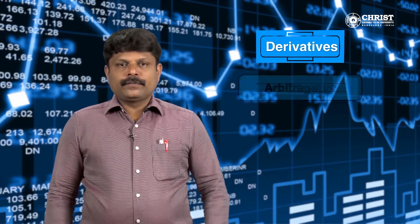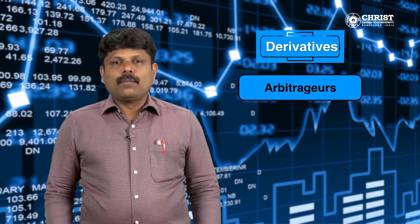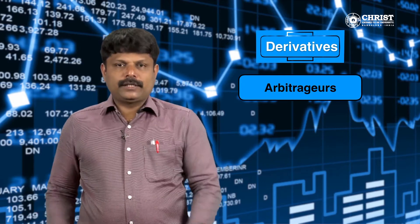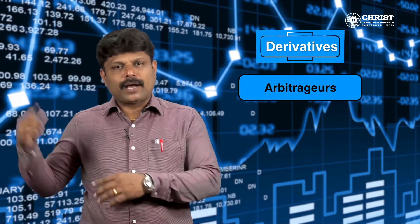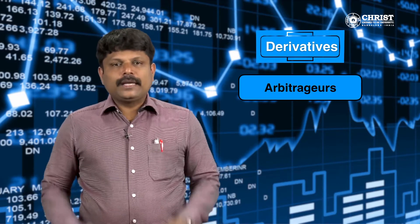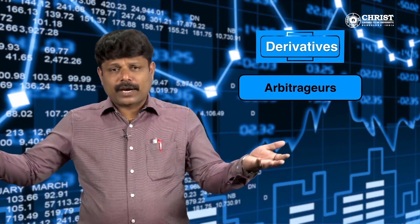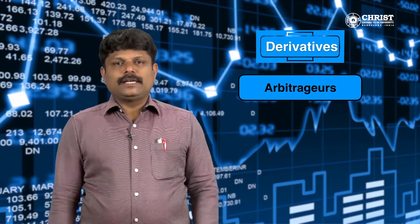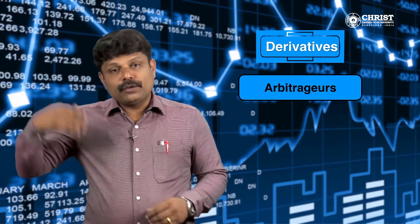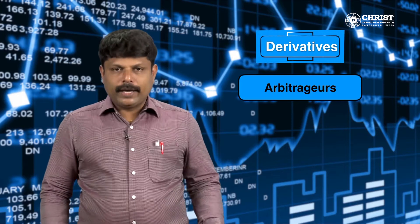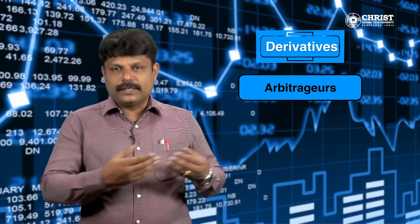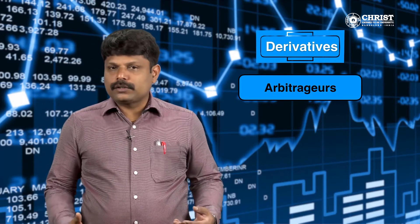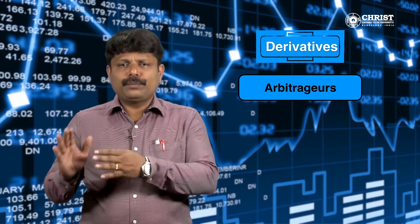Next are arbitrators. These utilize low-risk market imperfections to make profits. They simultaneously buy low-priced securities in one market and sell them at high prices in another. Suppose an equity share is quoted at rupees 1000 in the stock market and rupees 1050 in the futures market. An arbitrator buys at 1000 and sells at 1050, earning a low-risk profit of rupees 50.